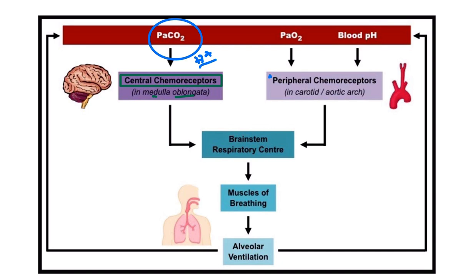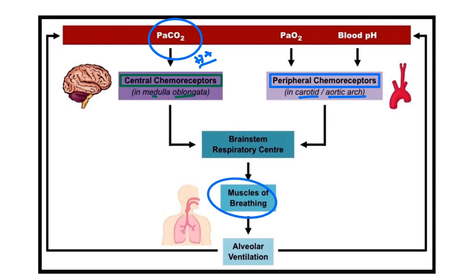On the other hand, the peripheral chemoreceptors are located at the carotid artery and aortic arch. Specifically, the peripheral chemoreceptors are located at the internal carotid artery and aortic arch. The respiratory centers are responsible for different types of muscle movements involved in breathing.